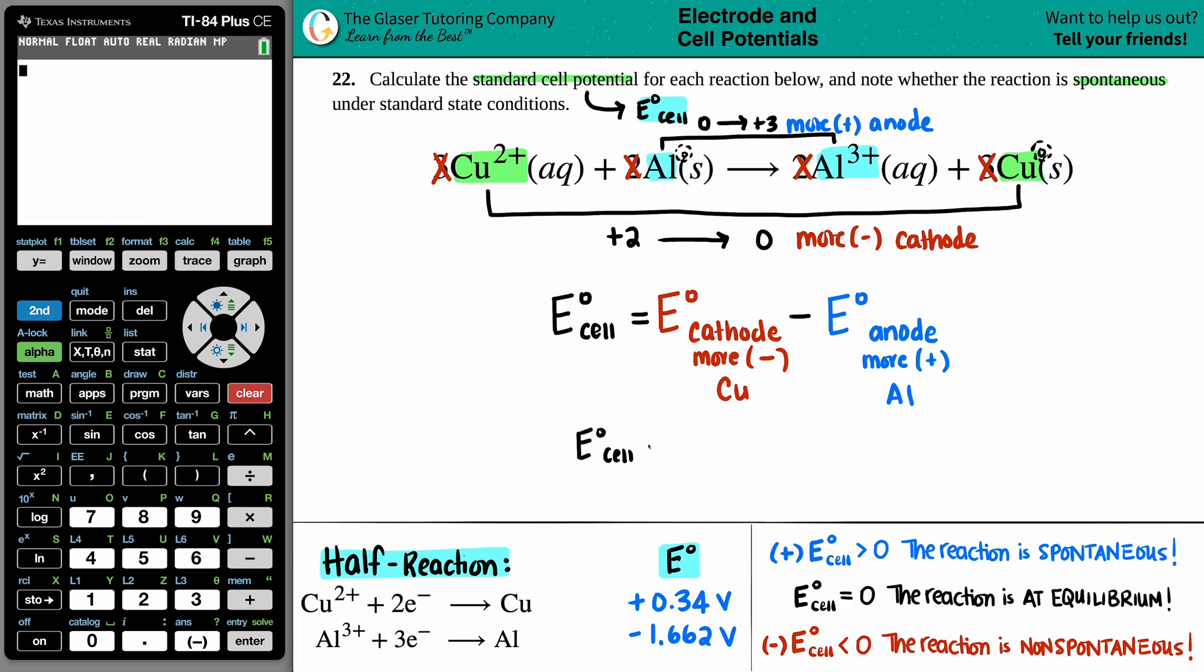E cell equals the cathode value, the copper one is 0.34 volts minus the anode value, which is a negative 1.662. Plug that into calc. And let's get your calcys out. 0.34 minus a negative 1.662.